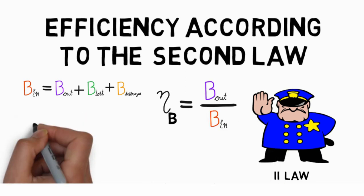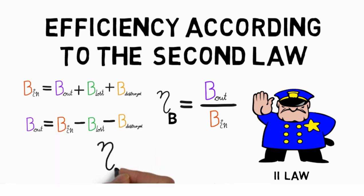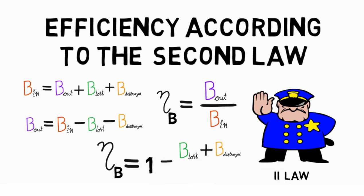Rearrange the exergy balance equation and substituting we get exergy efficiency eta B equal to 1 minus the sum of exergy lost and exergy destroyed divided by the exergy intake.